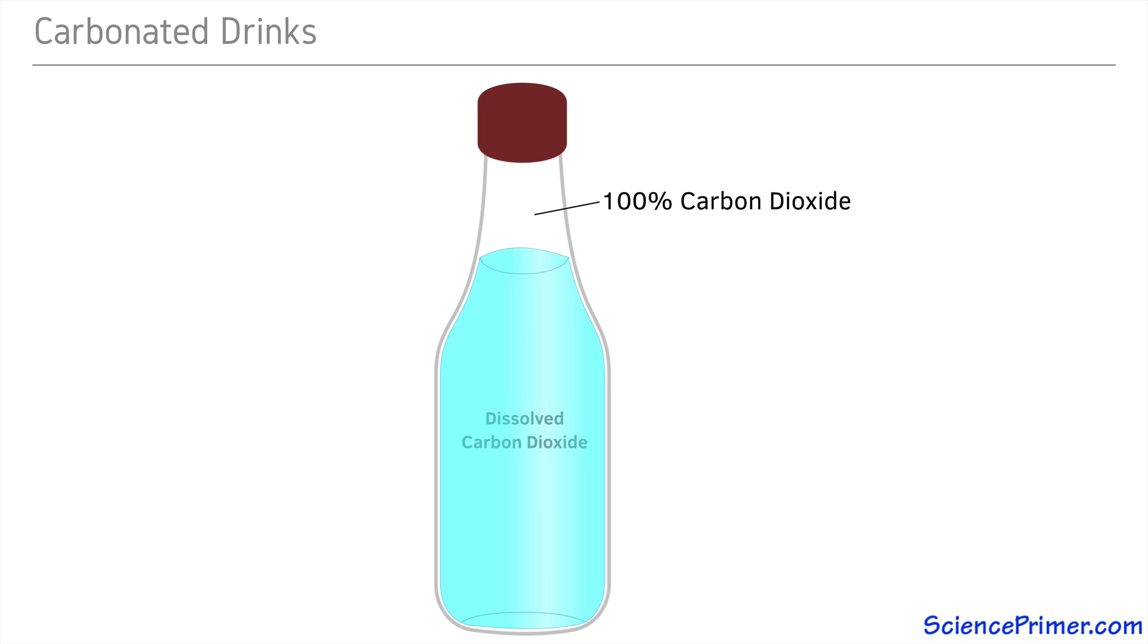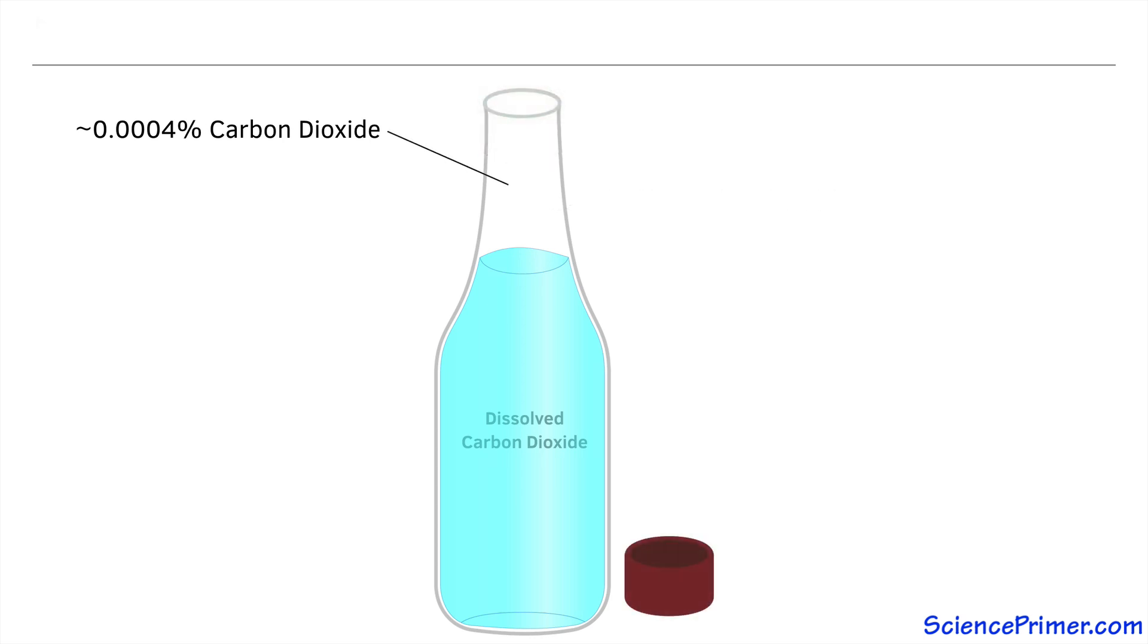the partial pressure of carbon dioxide in the space above the liquid is essentially 100%, allowing the liquid to hold a large concentration of dissolved carbon dioxide, much more than it would if it was open to the outside air, where carbon dioxide partial pressure is much lower. When the bottle is opened, the space above the liquid equilibrates with the air outside, drastically lowering the partial pressure and causing carbon dioxide gas to come out of solution, forming bubbles.